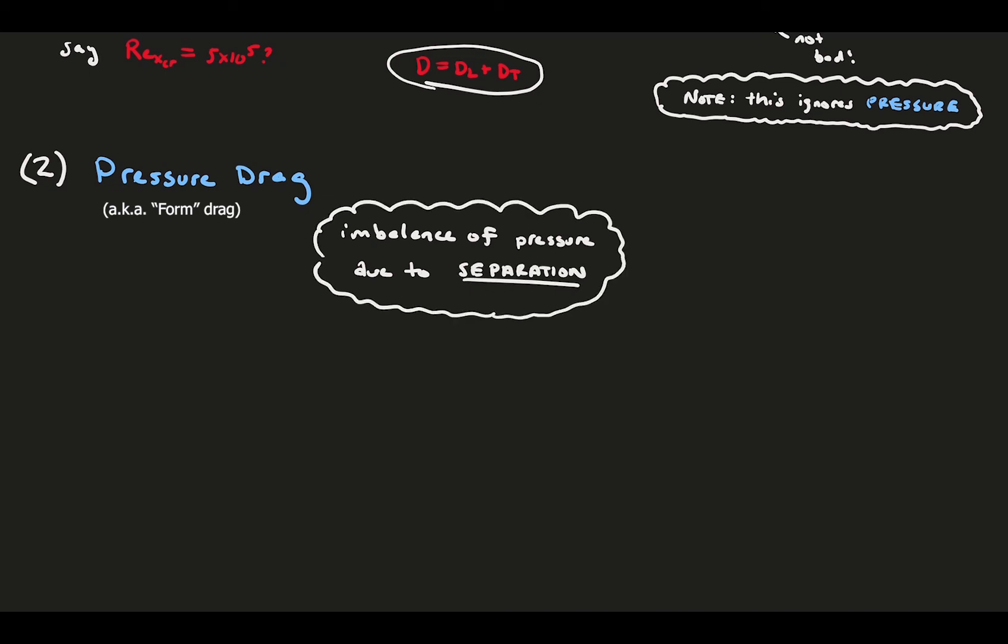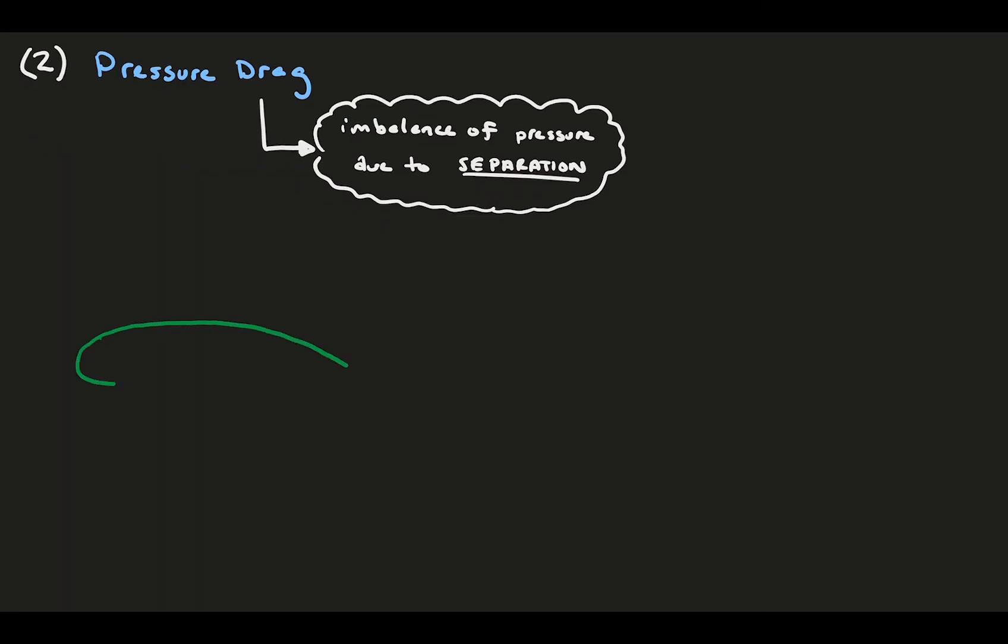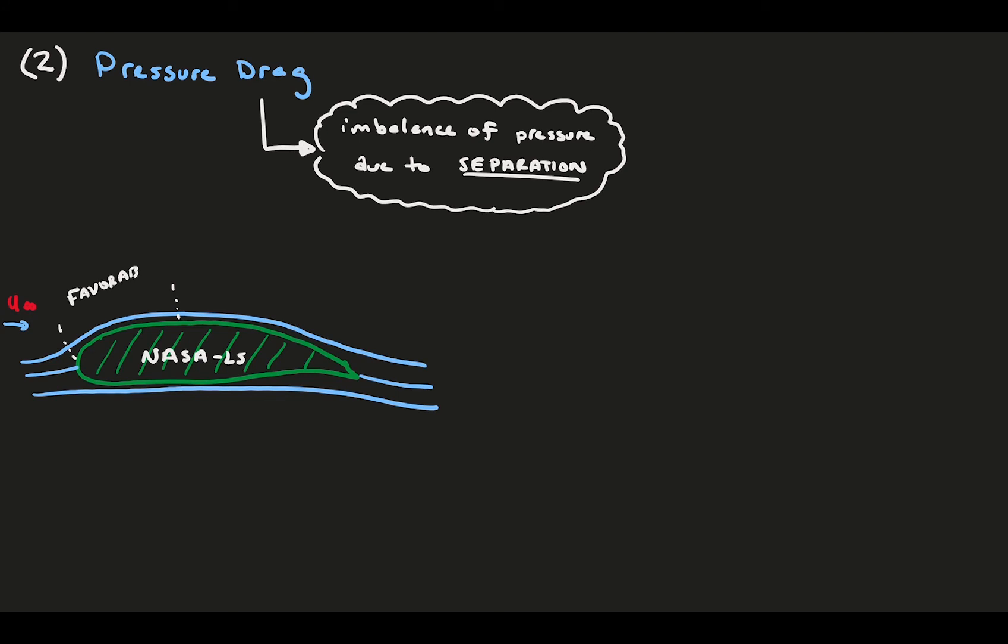Consider flow over a NASA low-speed foil, which is an optimized modern foil with idealized pressure distributions. As flow passes over the nose and up the foil, it accelerates and experiences a favorable pressure gradient. A favorable pressure gradient means that flow is decreasing with downstream distance. Once it passes over the top, it slows back down due to an adverse pressure gradient, which means that pressure is increasing and resisting the flow.